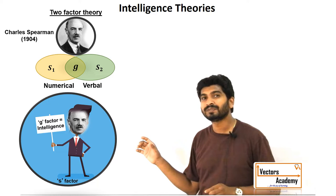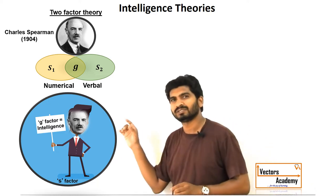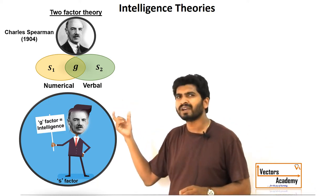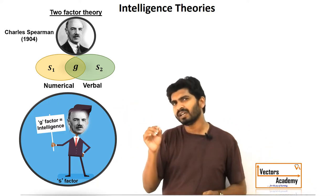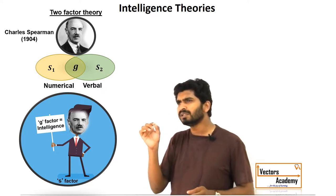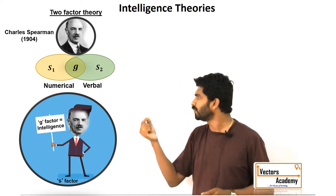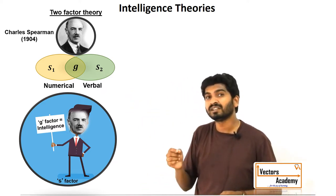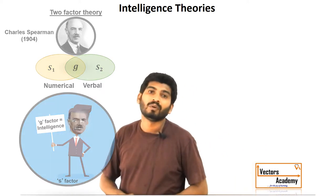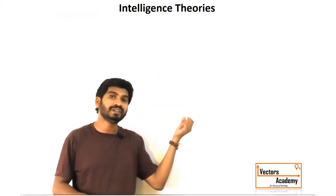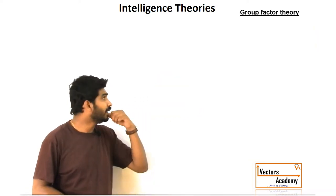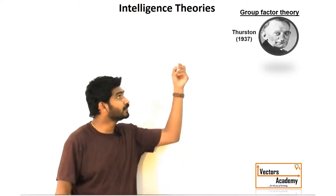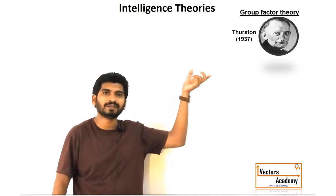Since he neglected the specific factors, that is the drawback of this theory. The specific factors were also somewhat responsible for measuring the intelligence of a person. So Thurstone redefined the theory and named it the group factor theory.